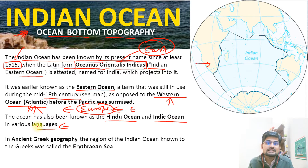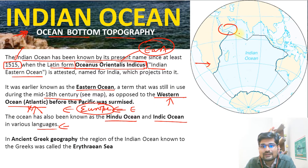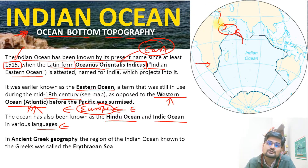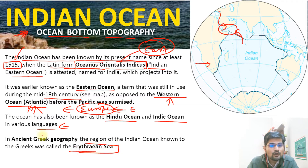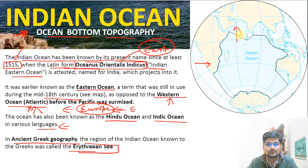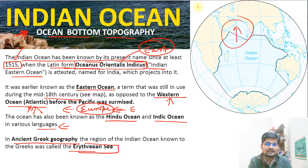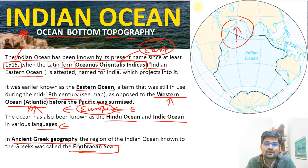In ancient Greek history, Herodotus wrote about this area — specifically the northwestern Indian Ocean. It was ruled by King Erythrus, and that's why it was called the Erythrian Sea. So in ancient Greek geography, what is today the northwestern Indian Ocean was referred to as the Erythrian Sea. Now let's go ahead and understand the ocean bottom topography, formation, geology, and various other features of Indian Ocean.